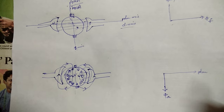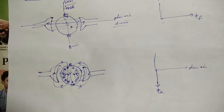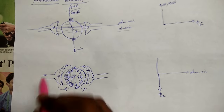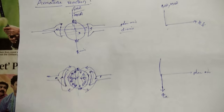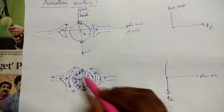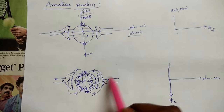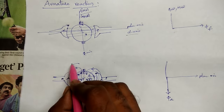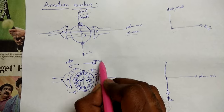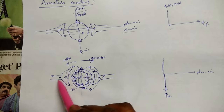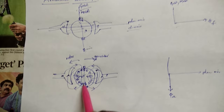The armature flux phi-A is along the polar axis or D-axis. GNA is perpendicular to this. Inside the machine, the flux lines create a south pole on one side and a north pole on the other due to armature flux. If field excitation is also given, in a motor this north pole will attract the opposite south pole and it will rotate in one direction; in a generator we have to rotate it in the opposite direction.